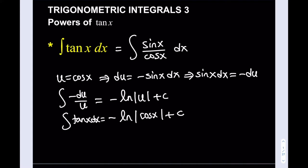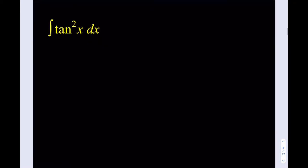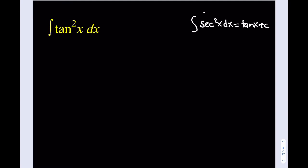This is an important integral. We're going to be using it in other integrals as well. The next problem is the integral of tangent squared x. For this one we're not going to use u-substitution; we'll use a different method. First, the integral of secant squared x dx equals tangent x plus c, because the derivative of tangent is secant squared — they're inverse operations. So if I can get a secant squared inside an integral, that would be nice. The relationship we need is: secant squared equals 1 plus tangent squared.